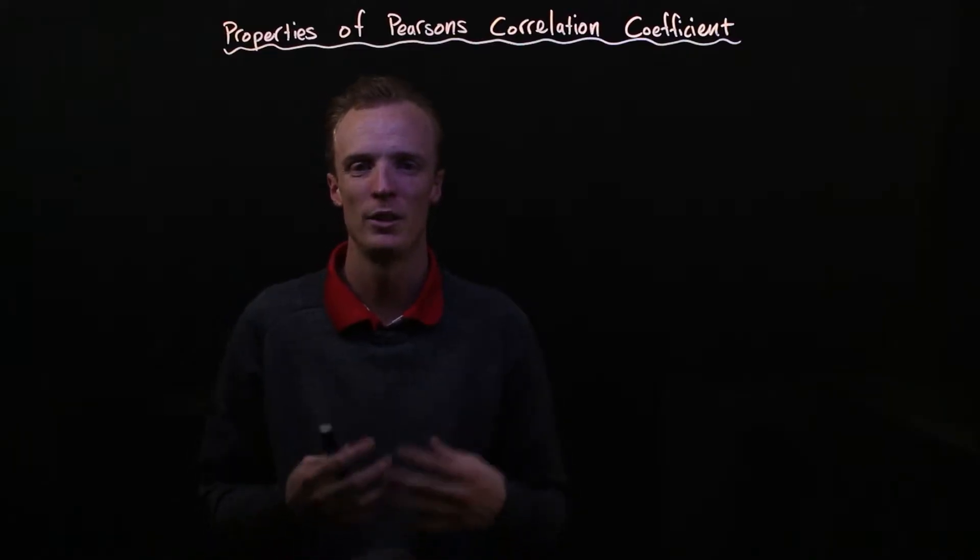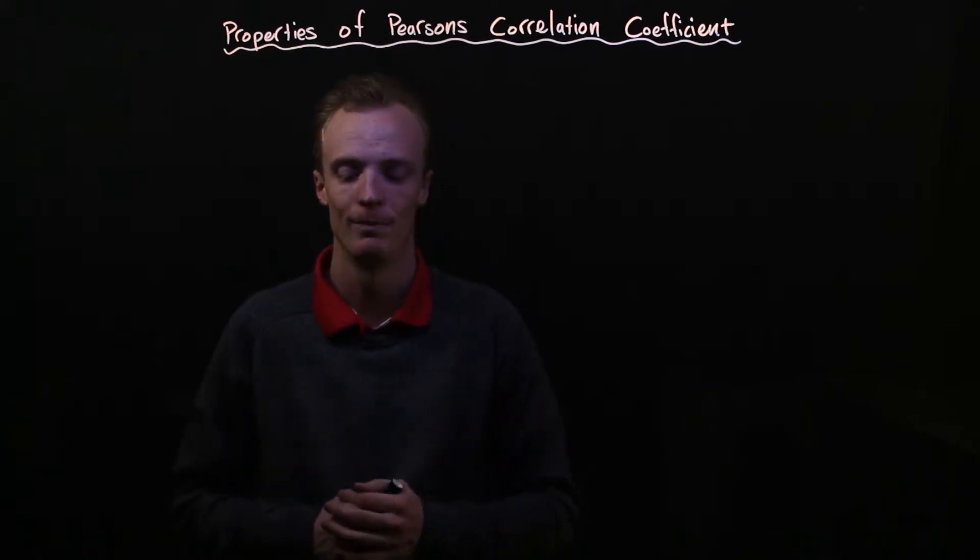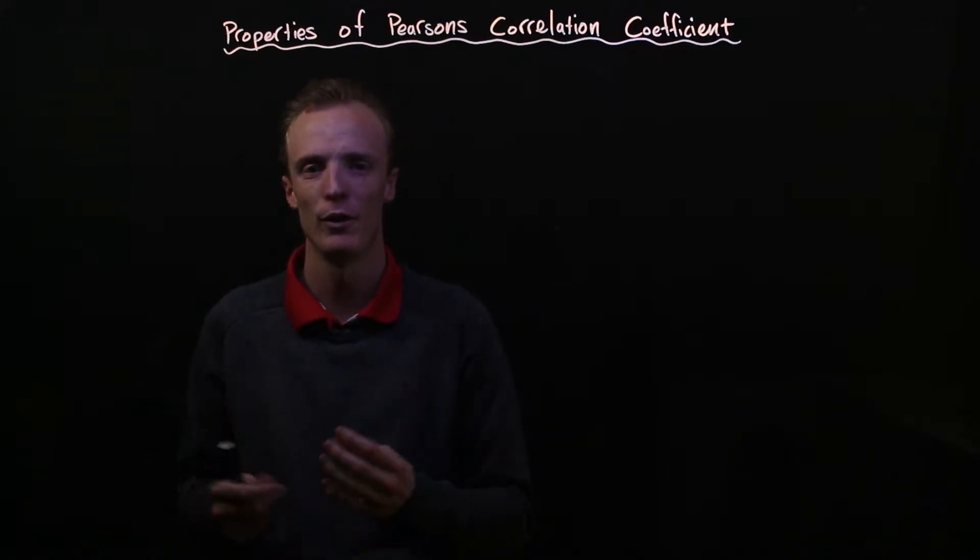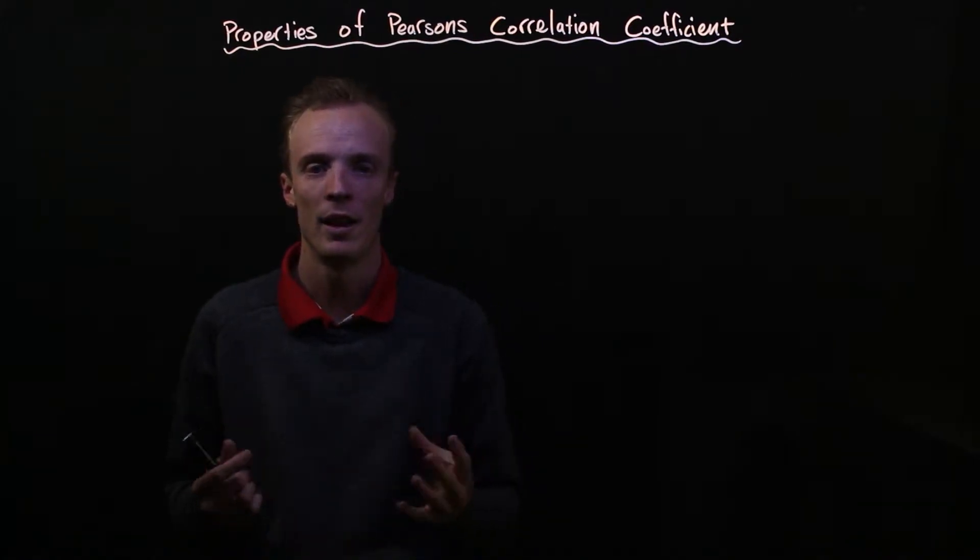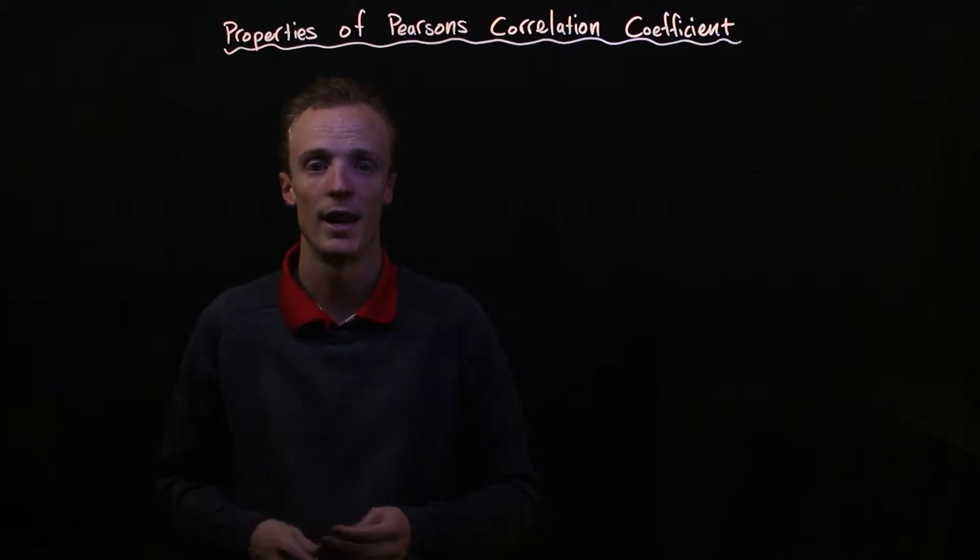Today we're going to talk about how we interpret some of the properties of Pearson's correlation coefficient. Now Pearson's correlation coefficient is frequently referred to as the R value and you can see that R value quite often when you're looking at models of relationships inside your calculator.